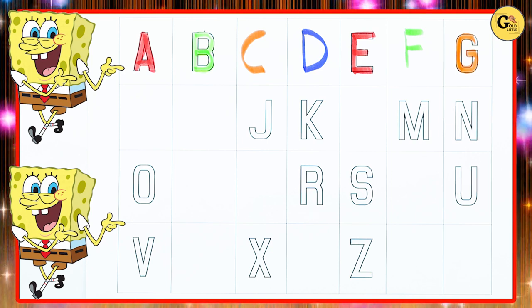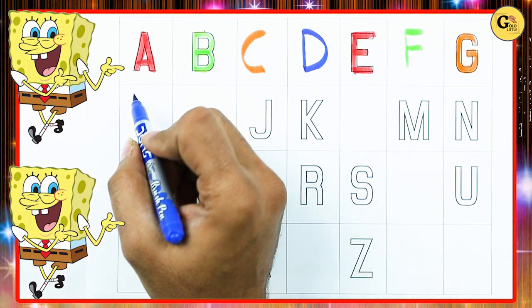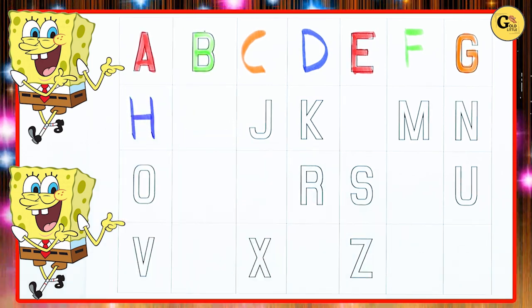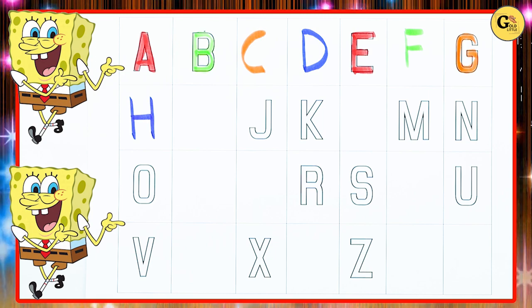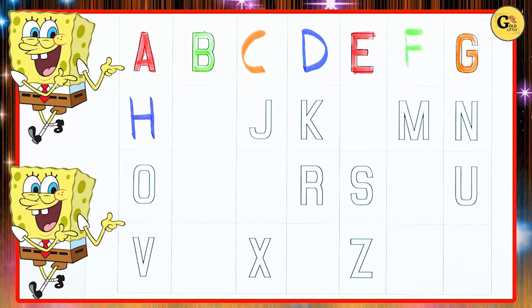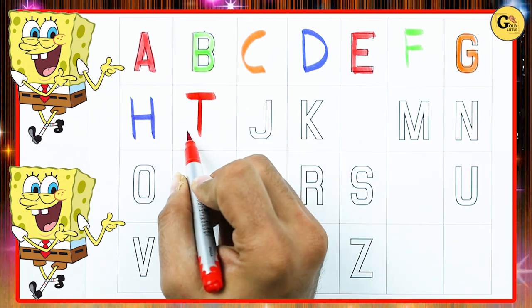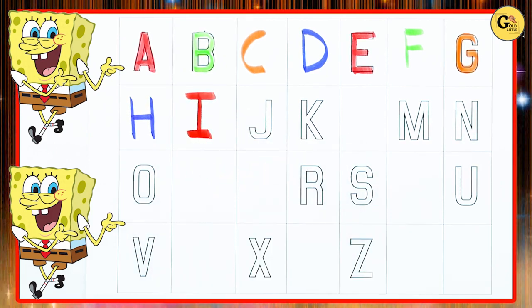What next? Tell me. Yes, right. It's H. H for hen. What next? Next is I. Very good. I for ice cream.